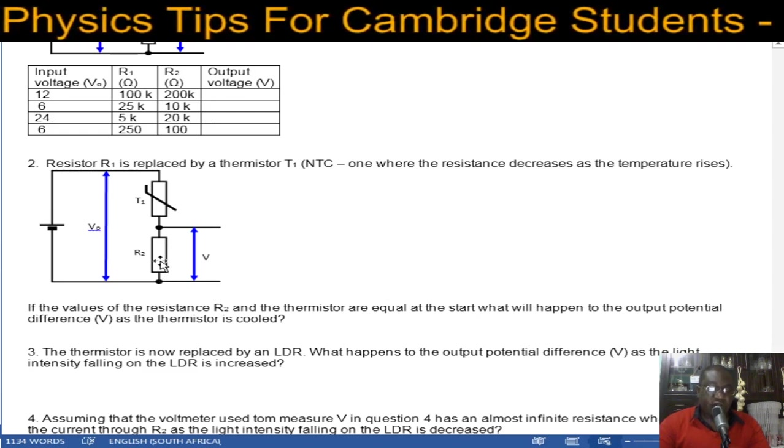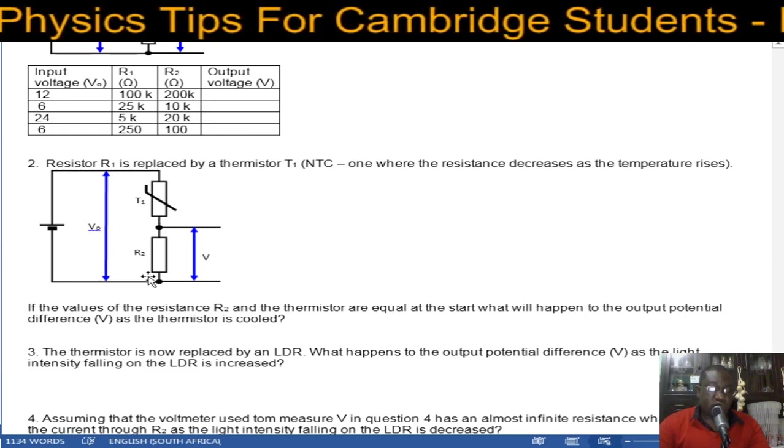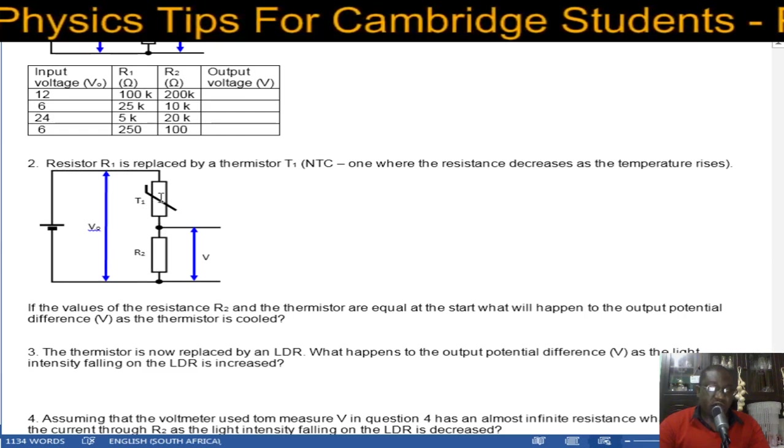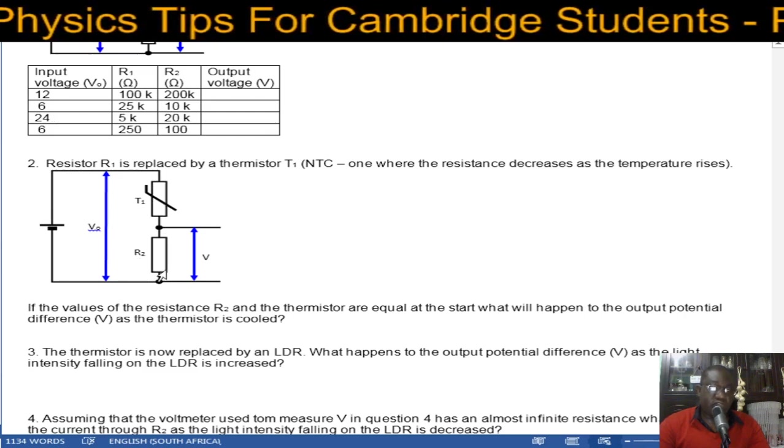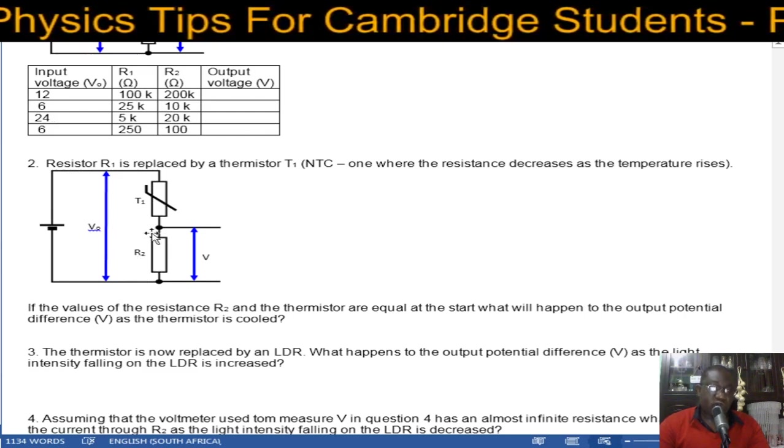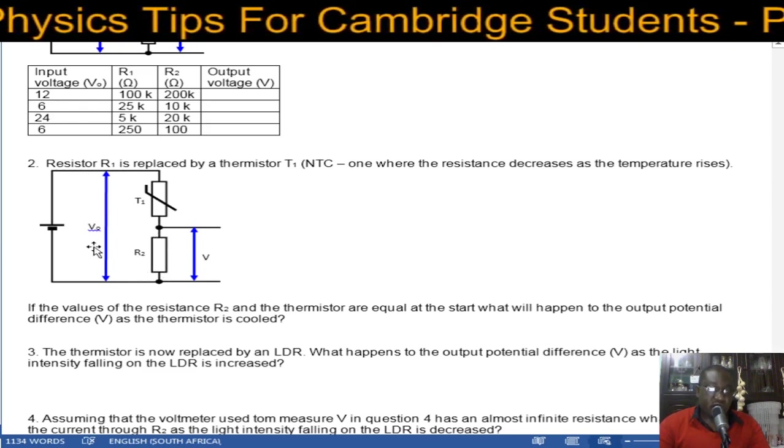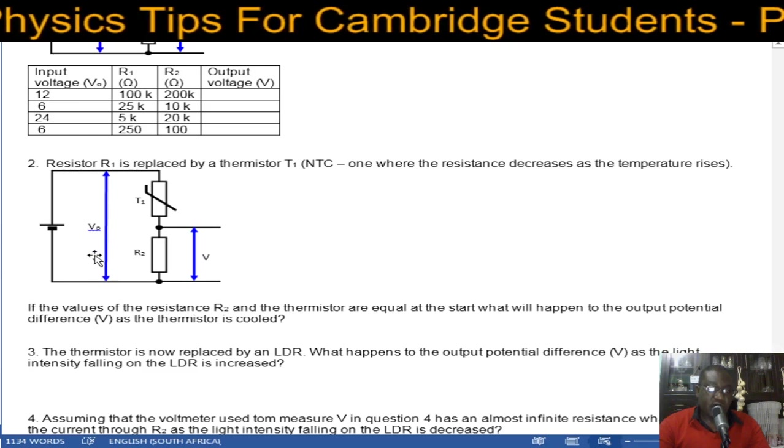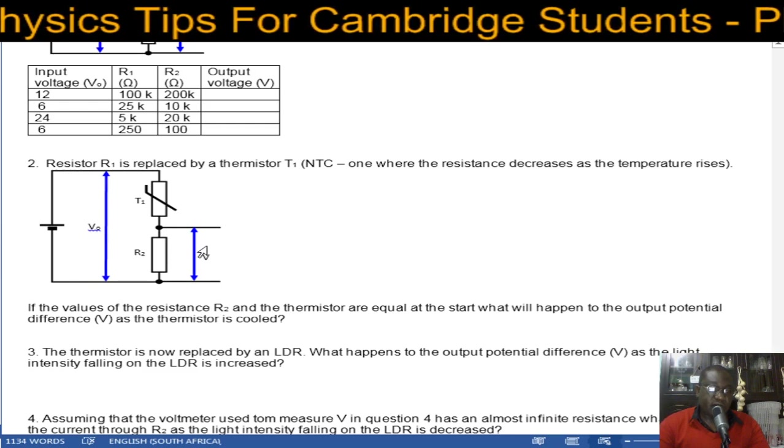At first, we have both having the same resistance. So which means it's 1 over 2. The ratio is 1 to 1. So the output voltage will be 1 over 2, that is 1 plus 1, 2 on the denominator. So times V0, which is V0. That will be V0 over 2 coming out.